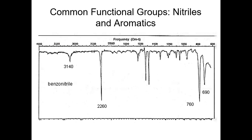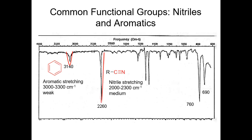Moving on to nitriles and aromatics: the aromatic C-H stretch is usually very weak, showing up between 3000 and 3300 wavenumbers, around 3140, depending on what's attached. Keep in mind what's shown on the spectrum — we call them stretches, but there are many types of molecular motion: stretching, bending, wagging, and twisting. The absorbance may result from a stretch or some other molecular motion depending on the functional group.